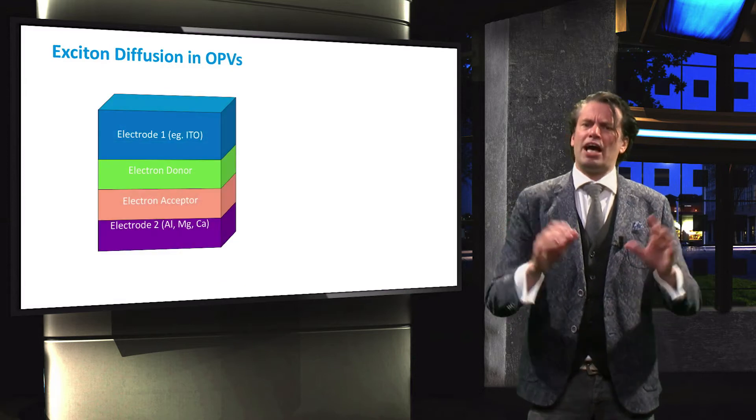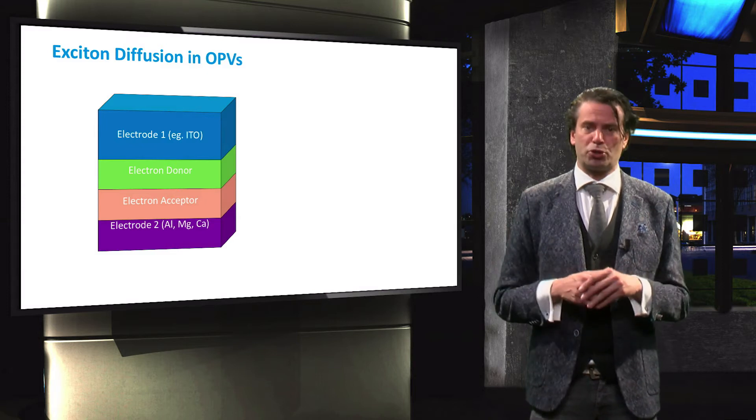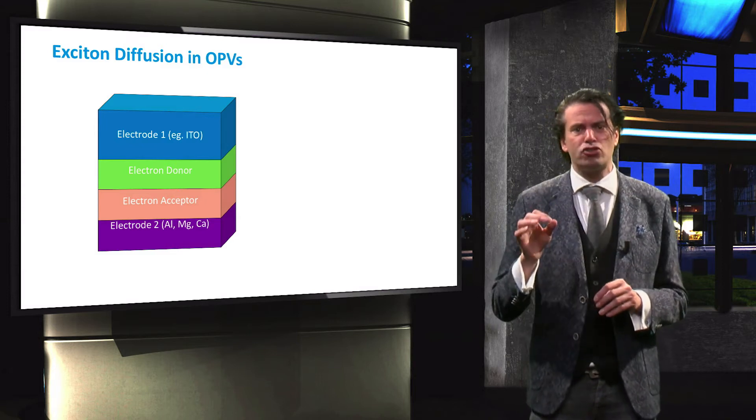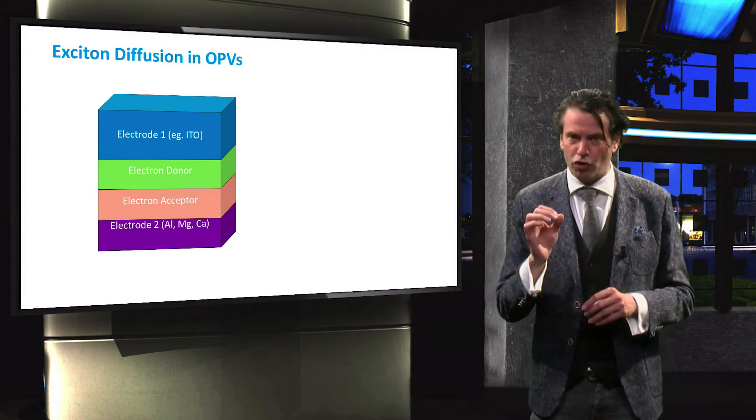In a normal heterojunction organic solar cell, the organic absorber material has a very high absorption coefficient, which requires an absorber layer with a thickness of about 100 nm to maximize the utilization of the solar spectrum.